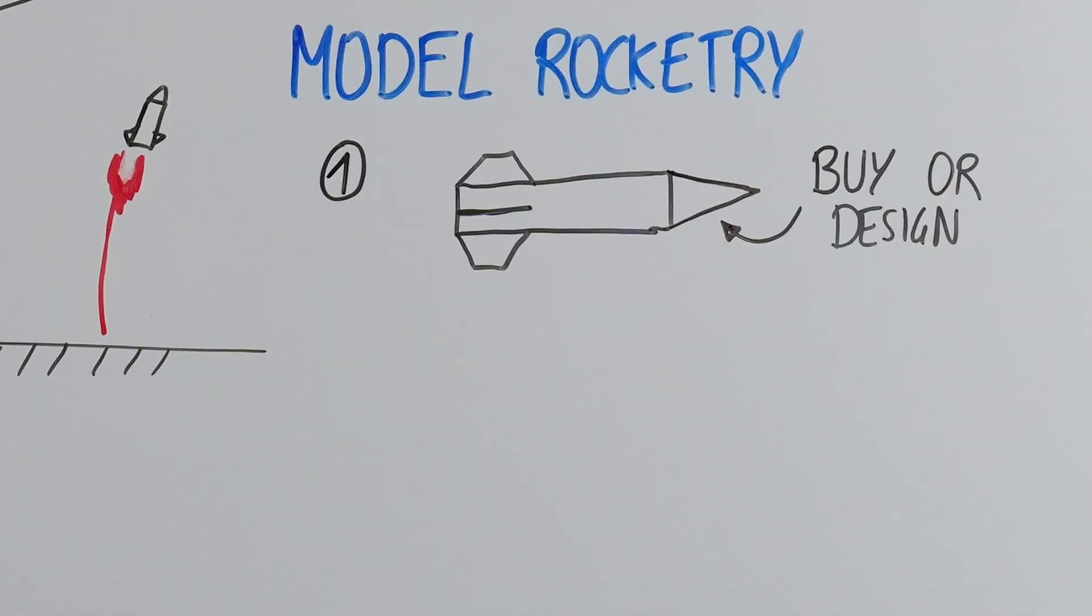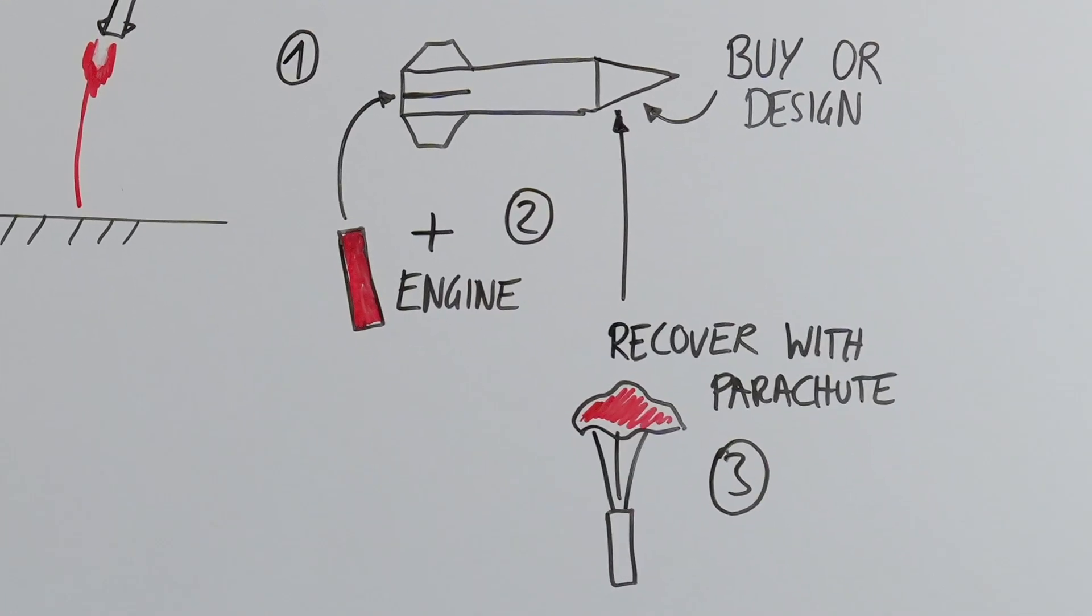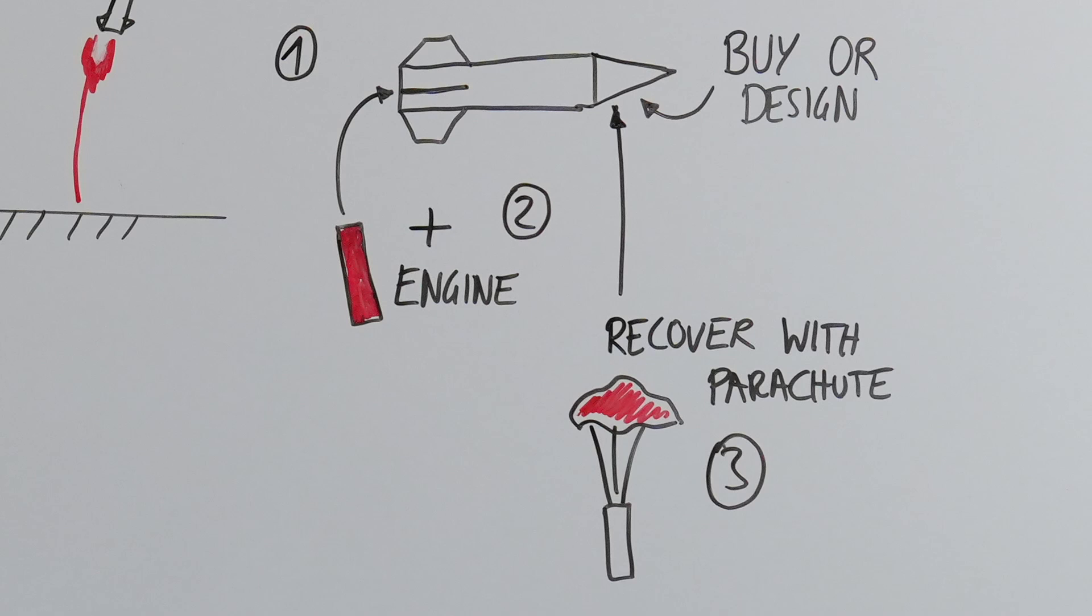For most, the focus of model rocketry is to buy a readily available model rocket or to physically design their own, to equip them with a proper solid rocket engine, and to recover the rocket with the help of a parachute.